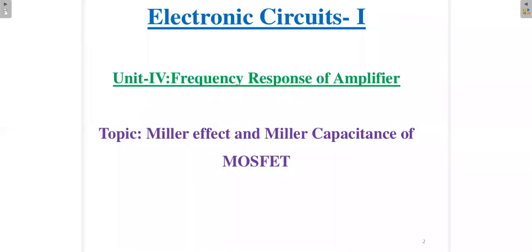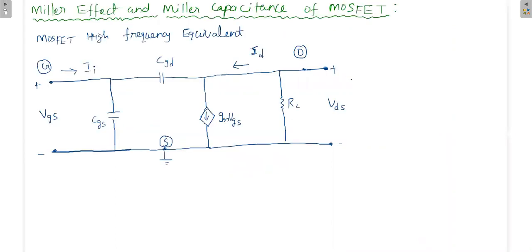Welcome to the course Electronics, Course 1, Unit 4. This video topic is Miller Effect and Miller Capacitance of MOSFET. This is the high-frequency model of MOSFET, where we have the input capacitance CGS, and CGD is the capacitance common between both input and output. GMVGS is the voltage-controlled current source and RL is the load resistance.